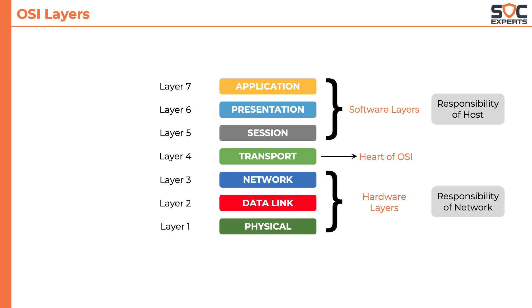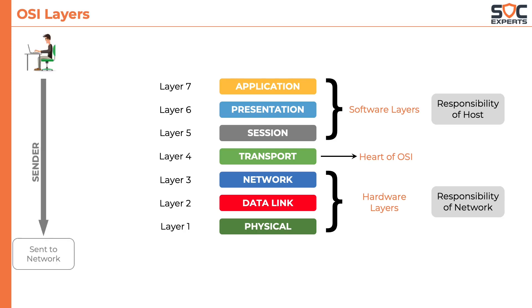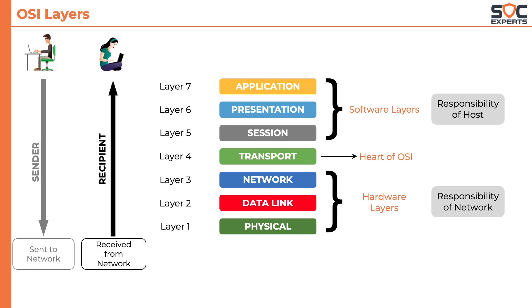It will be easier to understand the OSI layers if we trace a complete path from sender to recipient. When the sender sends a message, packet, or file, it is passed from the application layer all the way down to the physical layer. On the recipient end, it traverses from the physical layer back up to the application layer. We will look at an example to understand this better, but before that, let's learn what each layer is meant to do.